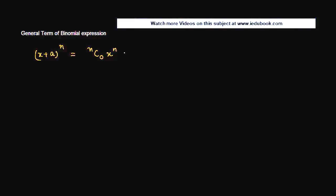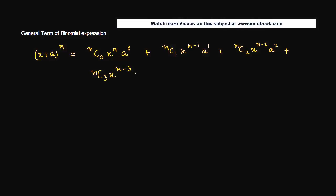x to the power n, a to the power 0, plus nC1, x to the power n minus 1, a to the power 1, plus nC2, x to the power n minus 2, a to the power 2, plus nC3, x to the power n minus 3, a to the power 3, and so on until the last term which is nCn, x to the power 0, a to the power n.